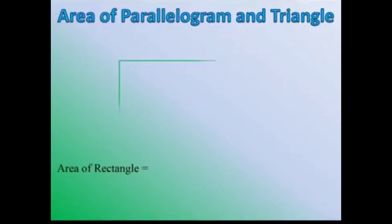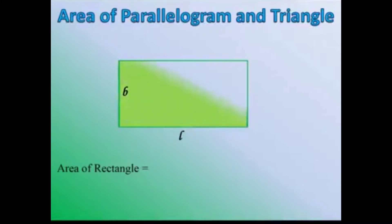So how do we find out the area of a rectangle? If L is the length of a rectangle and B is the breadth, then the area of a rectangle is equal to length into breadth, or we can say that L into B is the area of a rectangle.